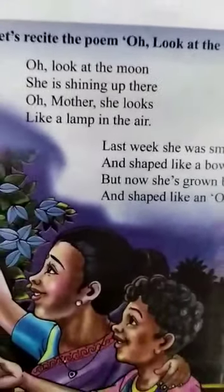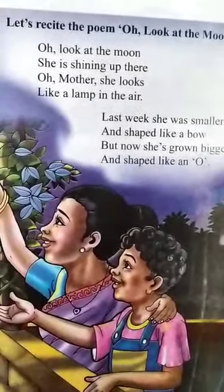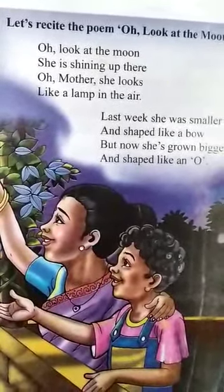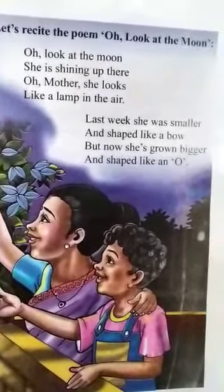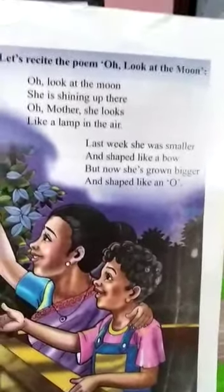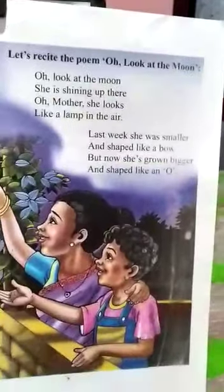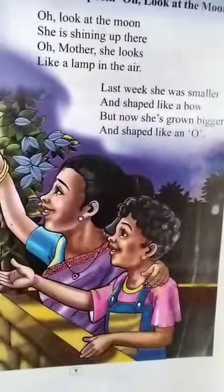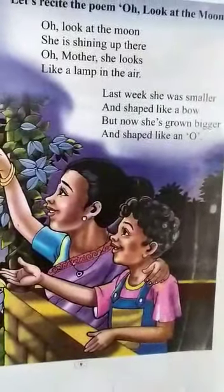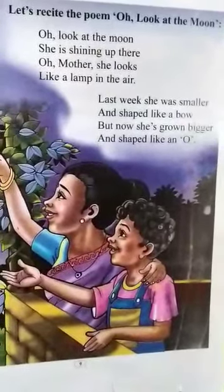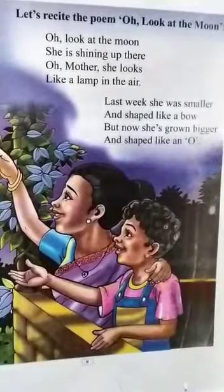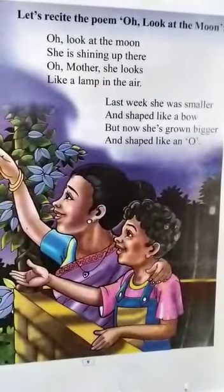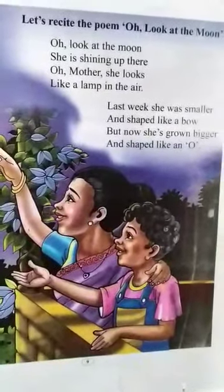Now see this. Here is your poem. Oh, look at the moon. Now let's recite the poem. Oh, look at the moon. She is shining up there. Oh, mother, she looks like a lamp in the air. Last week she was smaller and shaped like a bow. But now she has grown bigger and shaped like an owl.